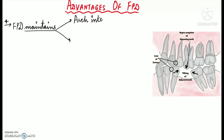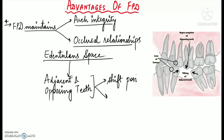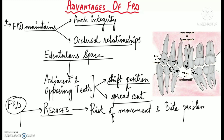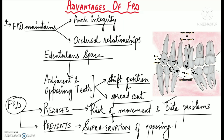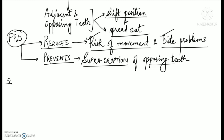Another advantage of FPD is that it helps to maintain arch integrity by maintaining the position of adjacent and opposing teeth, and also maintains the occlusal relationships. An edentulous space causes adjacent and opposing teeth to gradually shift position and spread out; however, FPD reduces the risk of movement of adjacent teeth and prevents supra-eruption of the opposing teeth. Additionally, the retainer part of a fixed partial denture restores fractured and badly carious teeth.